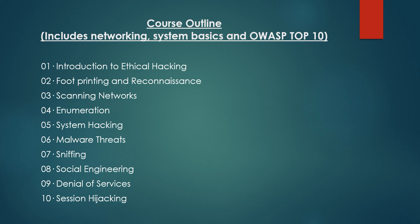Next we get into Denial of Service. For every website there is a server, and for every server there is a bandwidth. Say a server can accept 1,000 requests at a time — as a hacker I'll send 10,000 requests, filling the bandwidth. When an actual user tries to send a request, the server won't be able to accept it and will deny the request. That is Denial of Service, and we are going to see it practically.